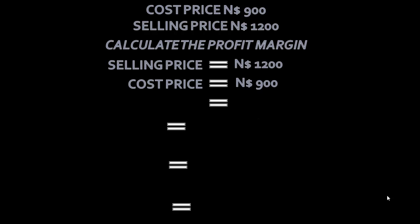And how do we do that? We say the selling price less the cost price will give us our profit. So $1,200 less $900 will give us $300.